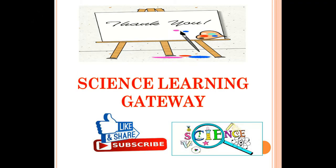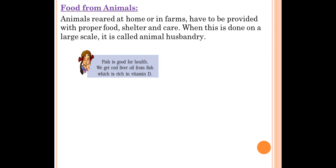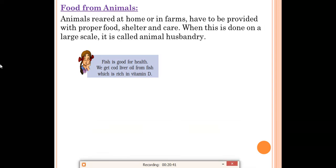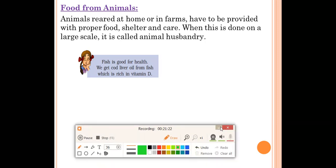The last topic is food from animals. We get food from two sources: plants and animals. From animals we get eggs, chicken, milk, butter, meat, cheese, paneer, and honey. Animals reared at home or on farms must be provided with proper food, shelter, and care. When this is done on a large scale, it is called animal husbandry. Animal husbandry is the process of rearing animals to get useful products while providing them proper food, shelter, and care.